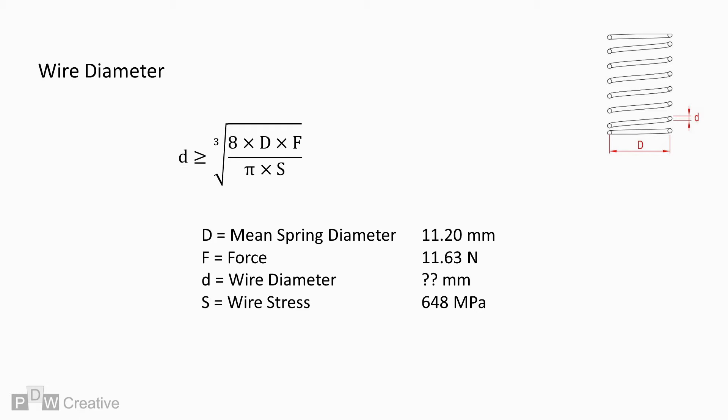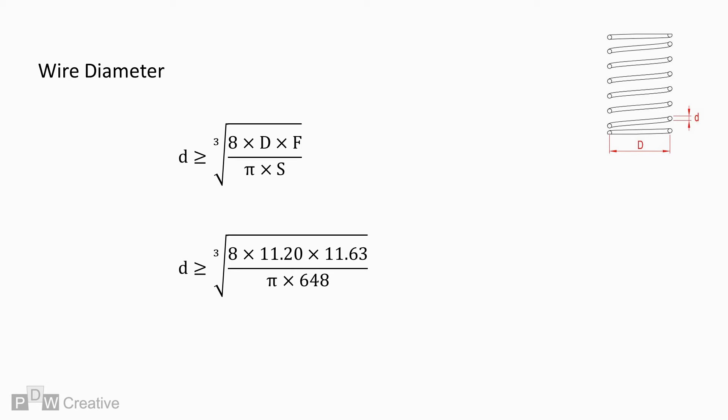For the wire diameter we can sub in the mean diameter of 11.20 millimeters we just worked out. The other variables remain unchanged. Let's plug them into the equation. And we can confirm the optimal wire diameter is greater than or equal to 0.8 millimeters.